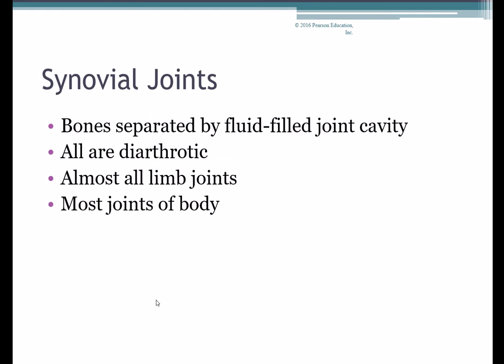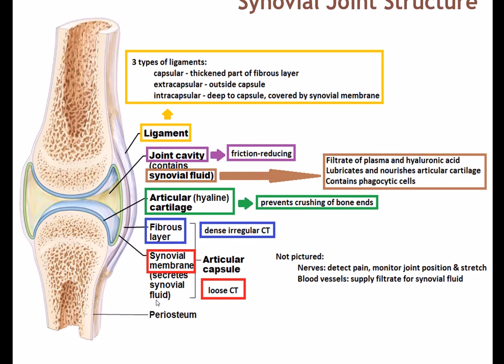Synovial joints make up most of the joints of the body — pretty much all of our limb joints are synovial joints and they're all diarthrotic, meaning freely movable. Their defining characteristic is that they separate the bones with a fluid-filled synovial cavity, or joint cavity. Looking at a generic synovial joint, you can see the joint cavity, which is really all about reducing friction. This joint cavity is one of several friction-reducing structures in synovial joints.